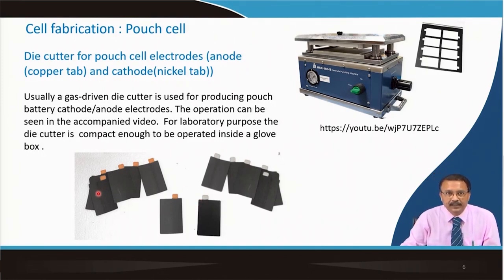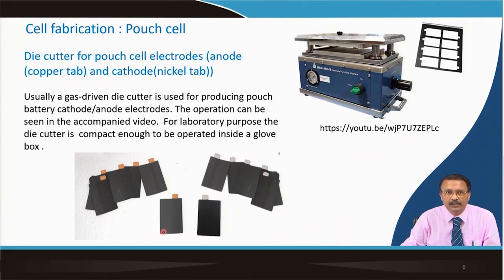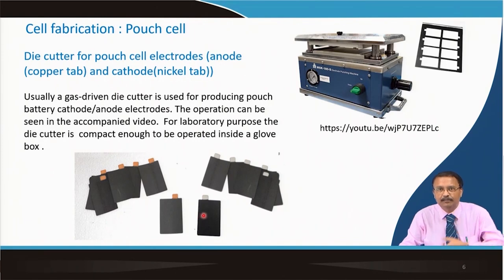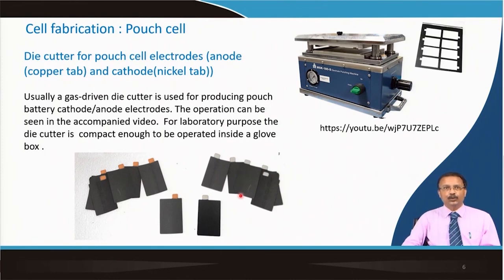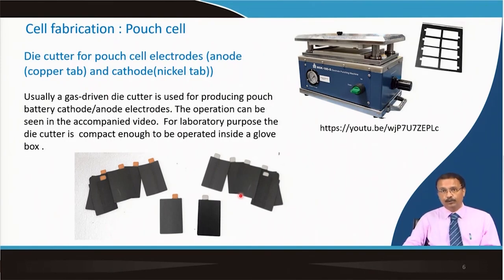The stacking machine — called a jet stacking machine — is very important because by hand you cannot insert separators and keep placing electrodes one by one to build a bigger battery. That is done in an automatic machine. Remember, the anode has a copper tab and the cathode has a nickel tab. The copper tab is connected to the copper current collector and the nickel tab is connected through an aluminium current collector for the positive electrode material.